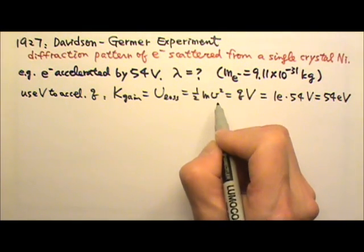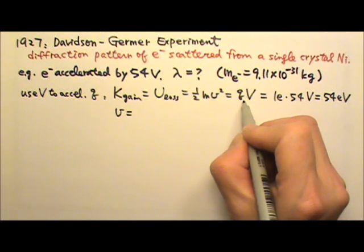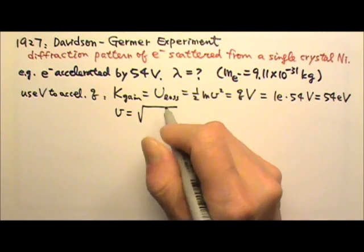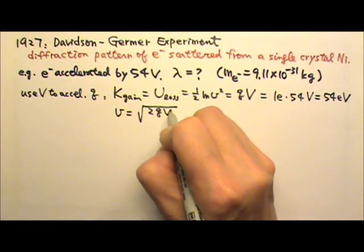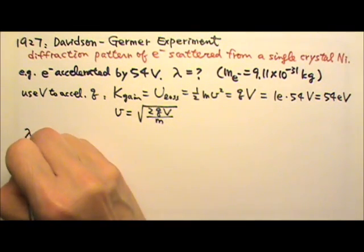So let me solve for the speed first. If I solve for the speed, I can multiply by 2 on both sides, divide by m and then take square root. So this is twice the eV over m and then the square root of it.